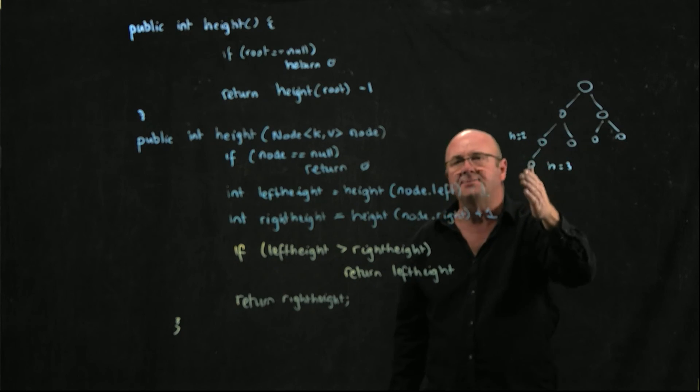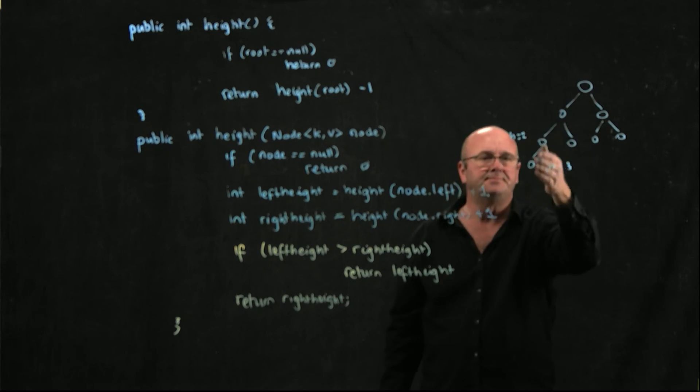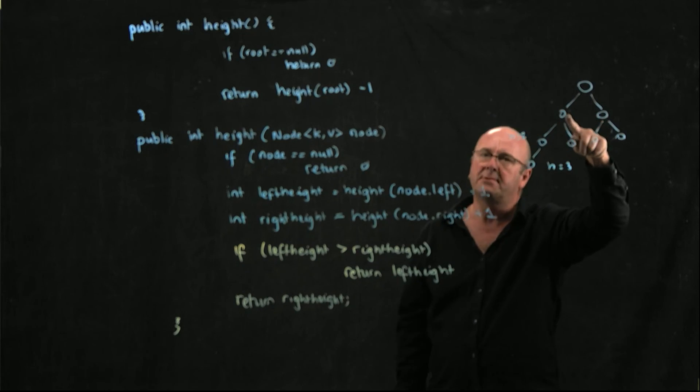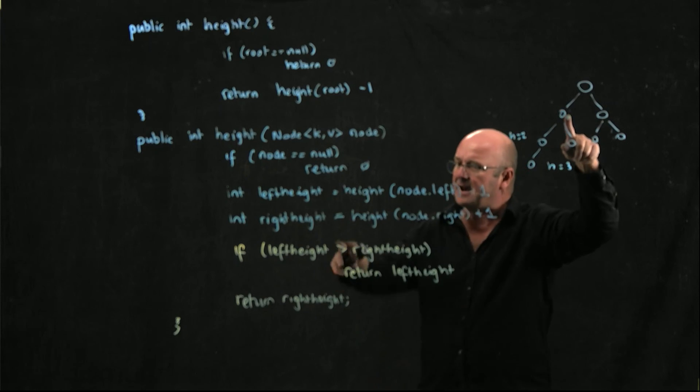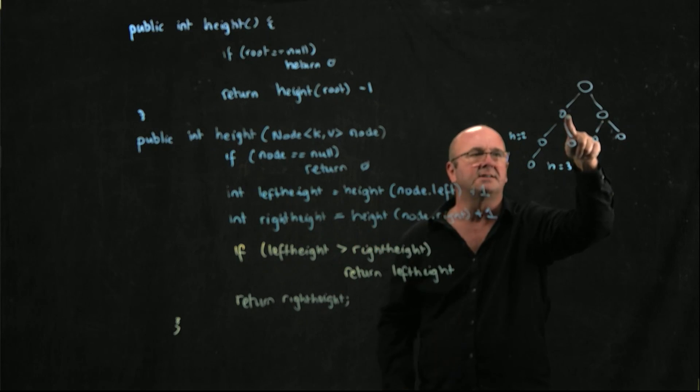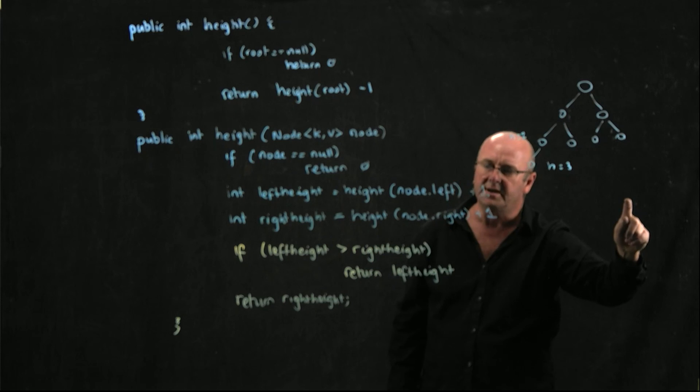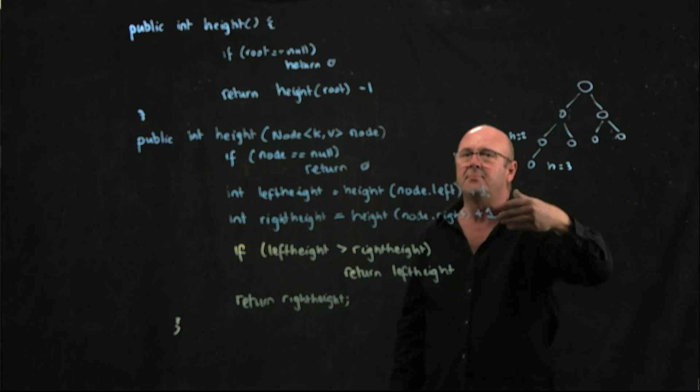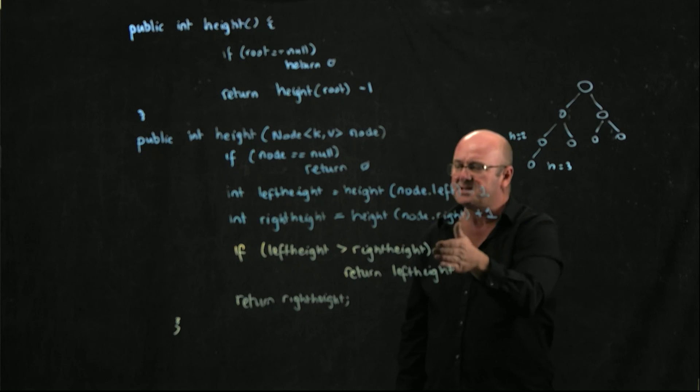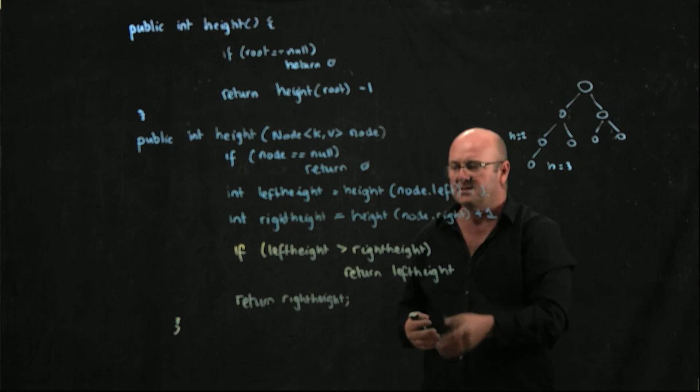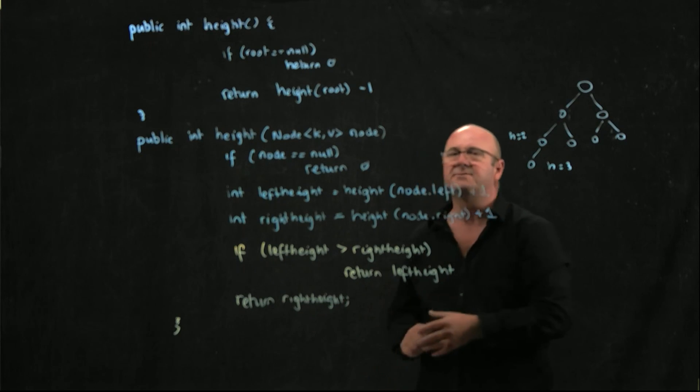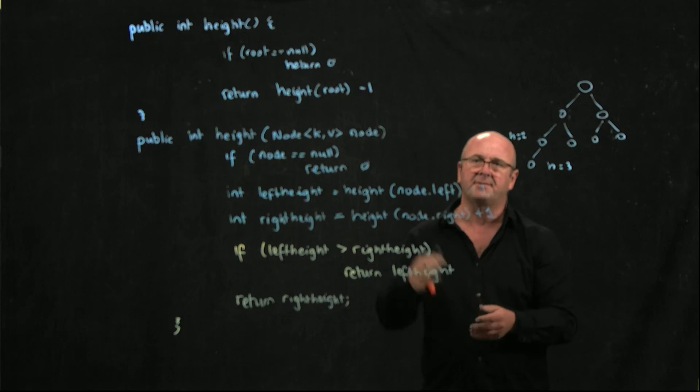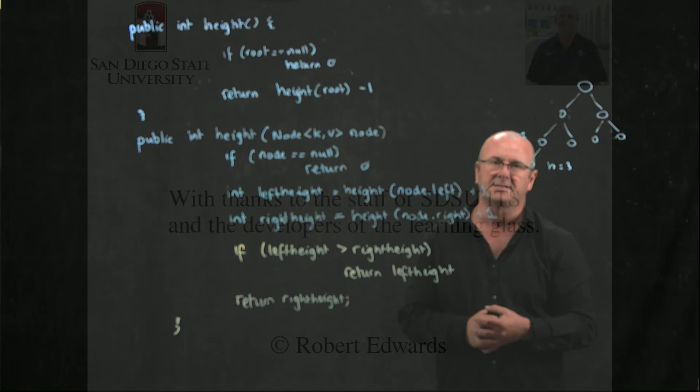We promise that we're going to calculate the height on the left, and eventually we get to a null so we return 0. At some point we get back to our promise where we said, okay, we promised that we were going to return the height on the left. Now, let's calculate the height on the right and so we go down the right tree. We make a promise that we're going to do that. At some point we get back because we're done and so we just say is left bigger than right? Return left, otherwise return right. So we have a nice simple recursive method for calculating the height on a tree.